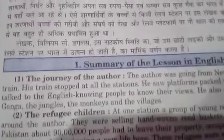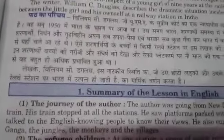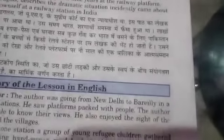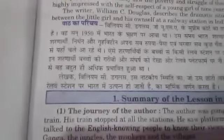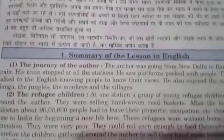Summary of the lesson – The journey of the author: The author was going from New Delhi to Borelli by train. His train stopped at all the stations. He saw platforms packed with people. The author talked to English-knowing people to know their views. He also enjoyed the sight of the Ganga, the jungles, the monkeys, and the villages.